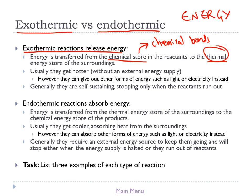Usually exothermic reactions do get hotter, however they can sometimes give out other forms of energy such as light or electrical energy instead. Also worth pointing out that they get hotter without an external energy supply — a reaction getting hotter because we're heating it with a Bunsen burner doesn't mean it's exothermic. It has to produce its own heat to count as exothermic. These reactions are generally self-sustaining, meaning they'll only stop when the reactants run out.